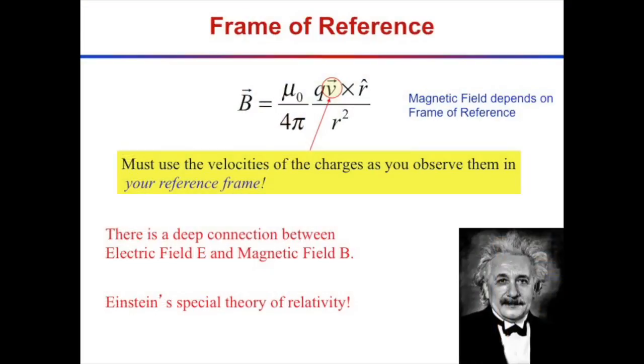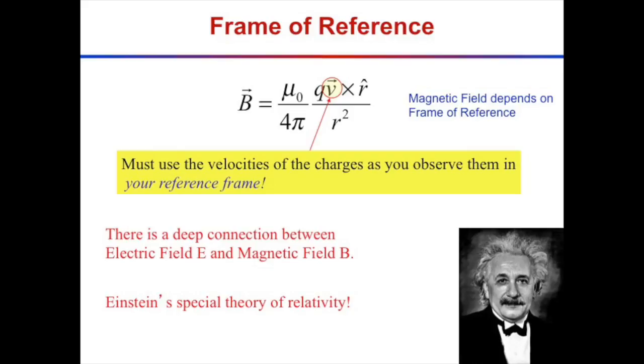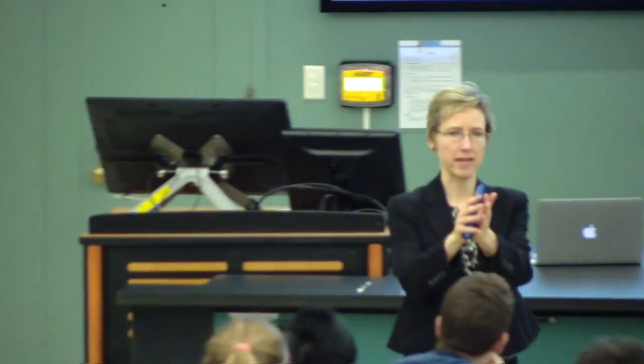This connection has to do with special relativity. Any time we talk about measuring velocities in different frames of reference, relativity comes up. There's a deep connection between electric field and magnetic field — they're two sides of the same coin. In any lab, you measure a particular electric and magnetic field, but in a different frame the ratio changes, like a coin twisting.